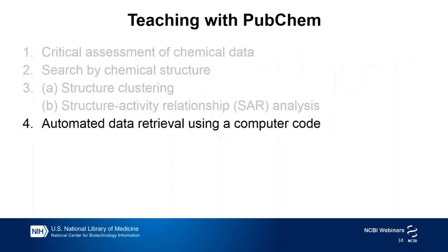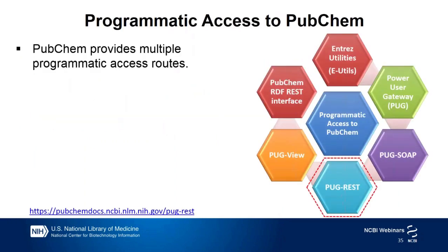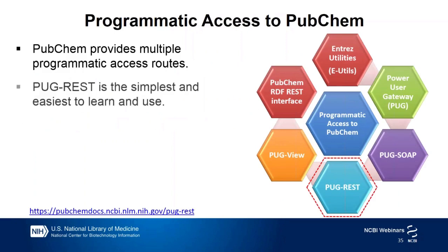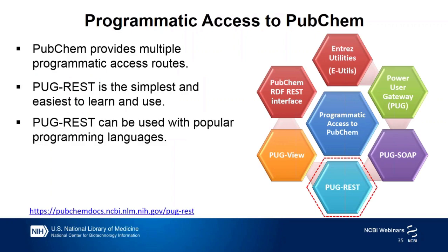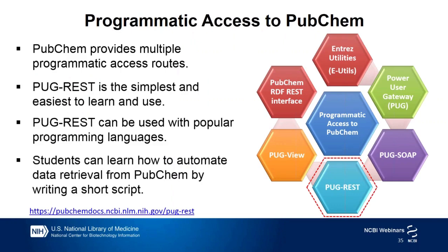The last topic is automated data retrieval using computer code. PubChem provides multiple programmatic access routes. Among them, PUG REST is the simplest and easiest to learn and use. It can be used with popular programming languages like Python, so students can learn how to automate data retrieval from PubChem by writing a short script.